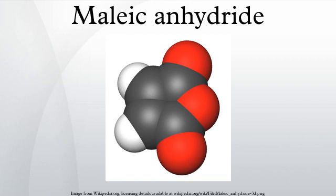Maleic anhydride was traditionally produced by the oxidation of benzene or other aromatic compounds. As of 2006, only a few smaller plants continue to use benzene. Instead, most maleic anhydride is produced by vapor phase oxidation of n-butane. The overall process converts the methyl groups to carboxylate and dehydrogenates the backbone.